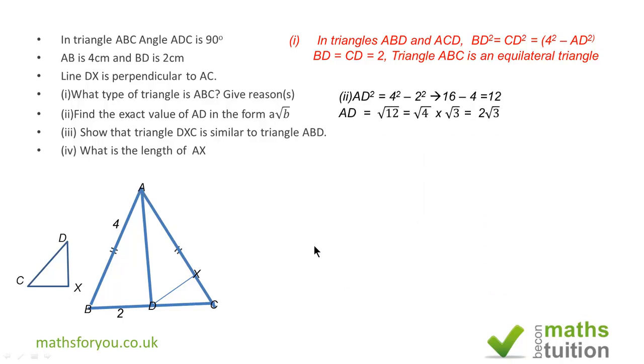Secondly, we are asked to find the exact value of AD in the form A√B. Now AD squared will be 4 squared minus 2 squared, because that's a right angle triangle and we're dealing with Pythagoras here. Which means that AD squared is 12.